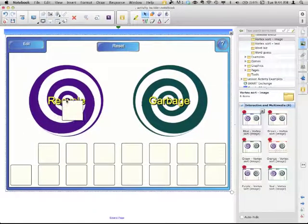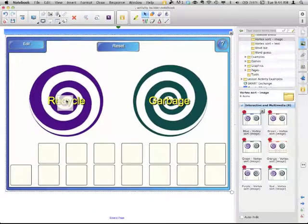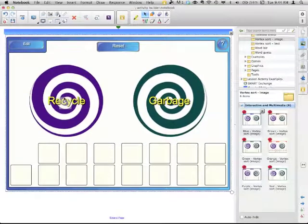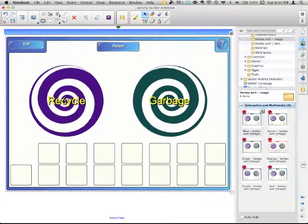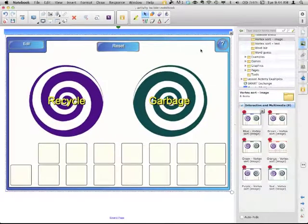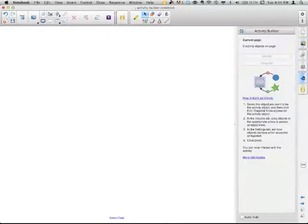And if it's correct, it disappears into the vortex. If it's incorrect, it bounces back. Now obviously we don't have the pictures in there, but that's what happens. That's the vortex. So the Activity Builder is a similar idea, but without the vortices. And you can make any object the object that is going to accept or reject something.